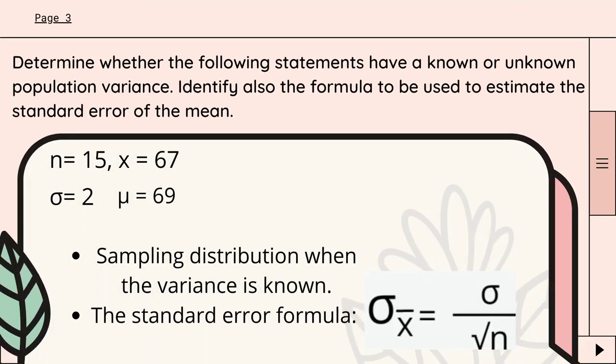Example number two. We will notice that only a given is provided. Even though we don't have statements, we can identify if the variance is known or unknown by only seeing the given. In this example, we can see the sigma or the population standard deviation. And automatically, in this example, the population variance is known.